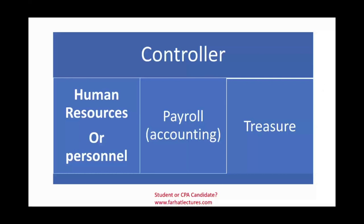In this cycle, we need separate departments — segregation of duties. We have HR and personnel as one department, payroll as two, the treasurer as three, and the controller as four. The controller oversees the whole process. In large companies, you would have four different departments or individuals reviewing the payroll cycle. We'll look at the role of each department.